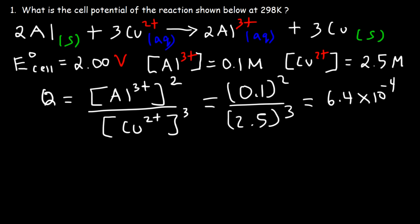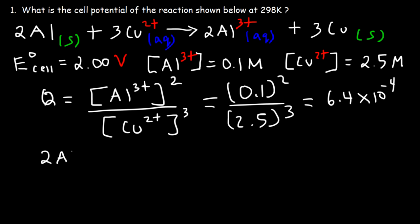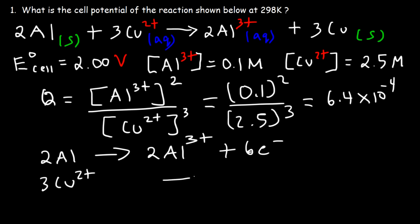Next, we need to calculate N. Separating into half reactions: two aluminum atoms on the left become two aluminum 3+ cations. The total charge on the left is 0, on the right it's 2 × 3 = 6, so 6 electrons are required. For the reduction half reaction, 3 Cu²⁺ on the left yields 3 Cu on the right: 3 × 2 = 6 electrons needed. Therefore, N = 6.